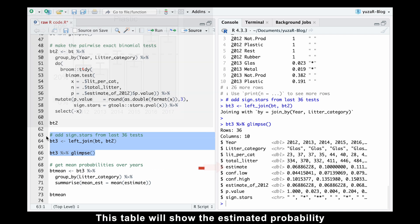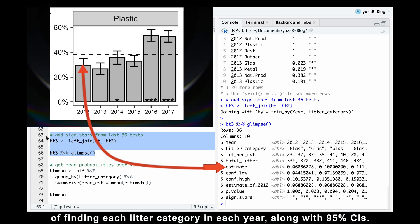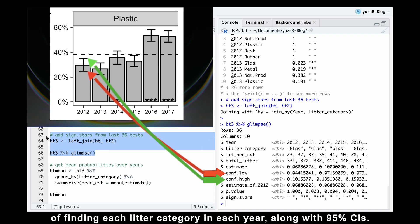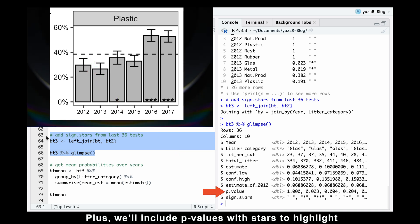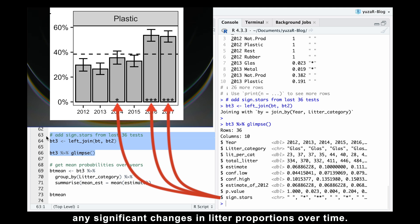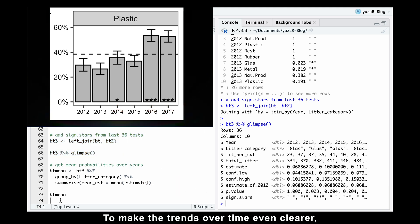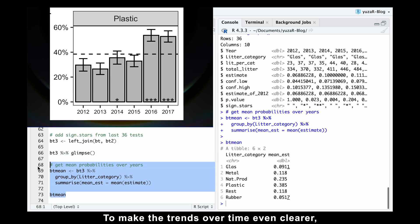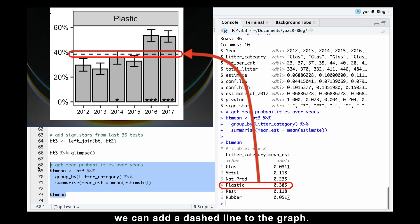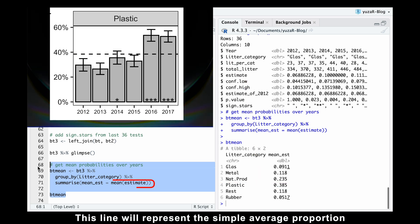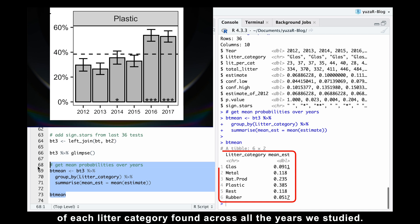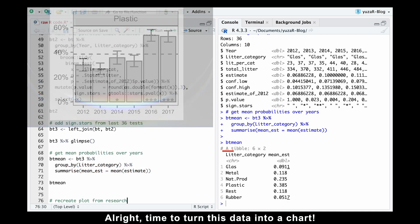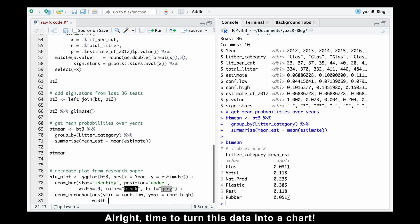We'll combine the results from both sets of binomial tests into a single awesome table. This table will show the estimated probability of finding each litter category in each year, along with their 95% confidence intervals. Plus we'll include p-values with stars to highlight any significant changes in litter proportions over time. To make the trends over time even clearer, we can add a dashed line to the graph. This line will represent the simple average proportion of each litter category found across all the years we studied. Alright, time to turn this data into a chart.